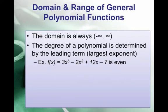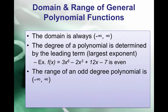For example, f(x) = 3x⁶ - 2x³ + 12x - 7. The largest exponent is 6, so this polynomial has degree 6 and is considered even because 6 is an even number. The range of an odd degree polynomial — 3, 5, 7, 9, and so forth — will always be (-∞, ∞) as well, just like the domain.